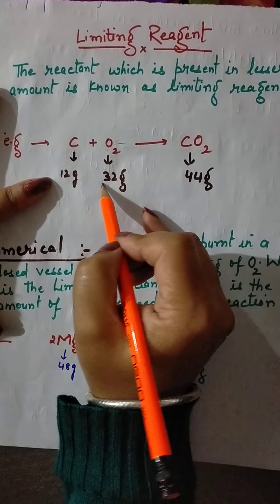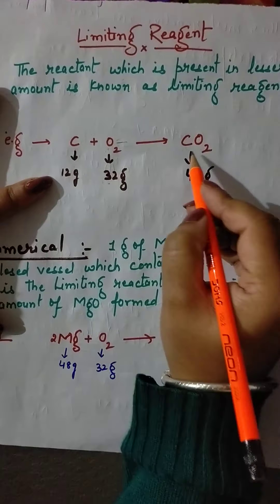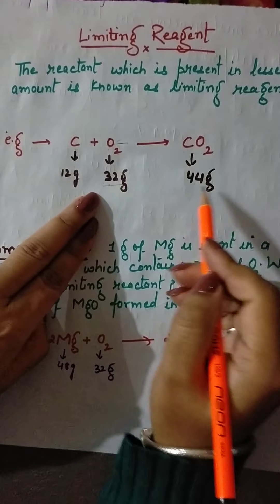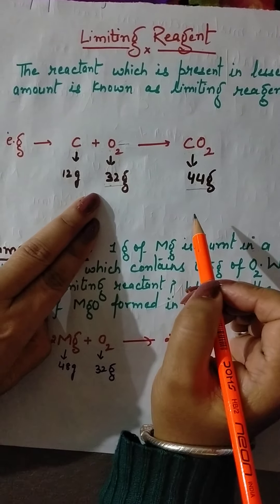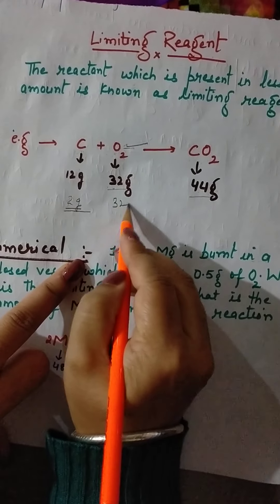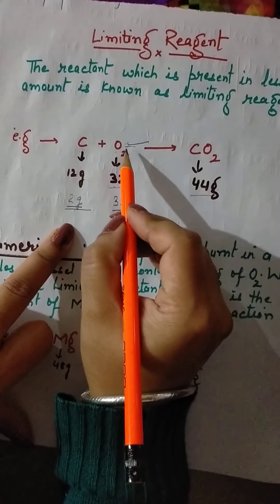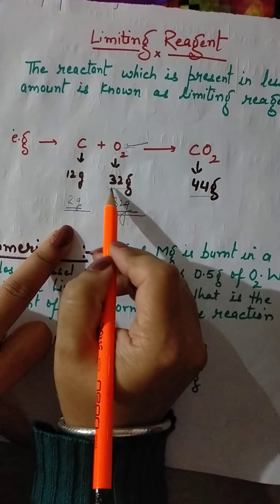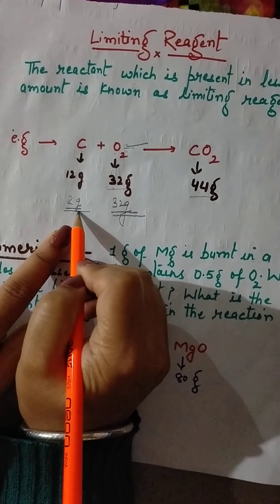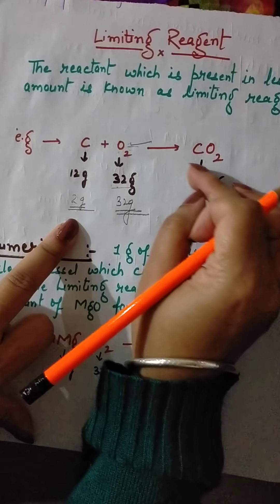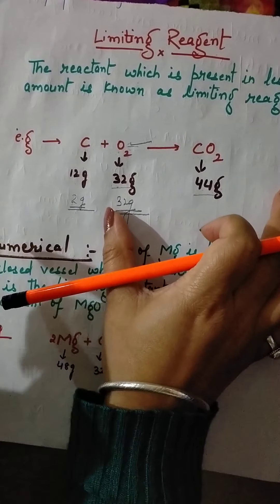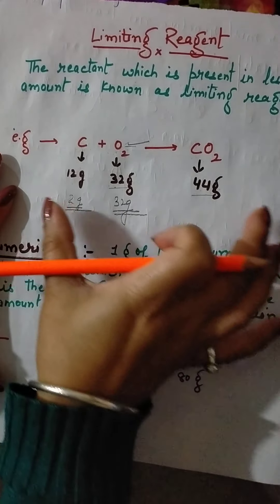So the standard information is: to consume 12 grams of carbon, I need 32 grams of oxygen, and that will produce 44 grams of CO2. But if I have only 2 grams of carbon and 32 grams of oxygen, which is the limiting reagent? Carbon — because I should have 12 grams of carbon for 32 grams of oxygen, but only 2 grams is available. Carbon is in the lesser amount, so carbon is the limiting reagent.